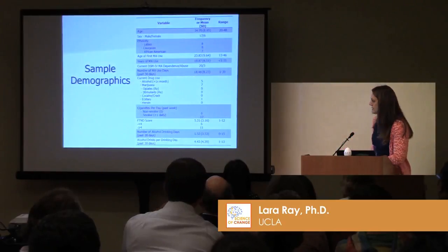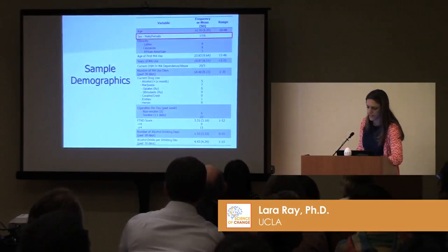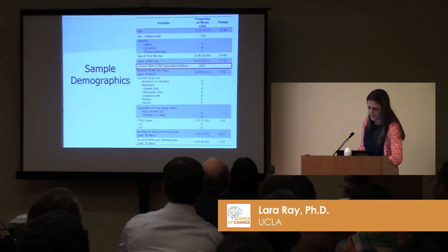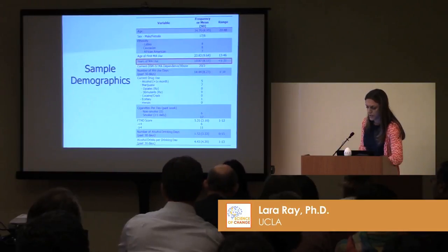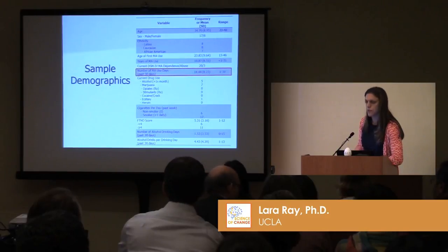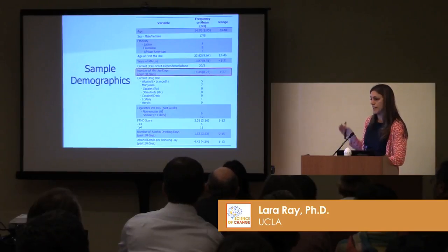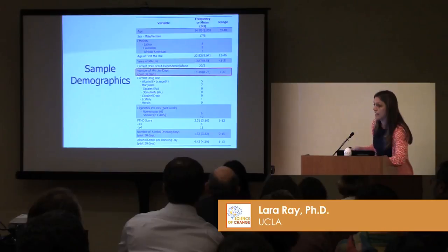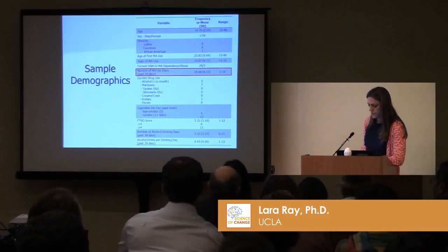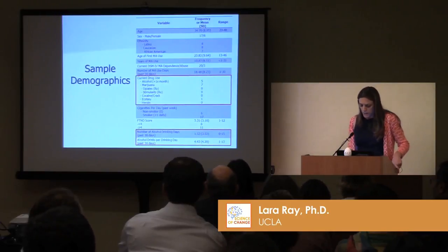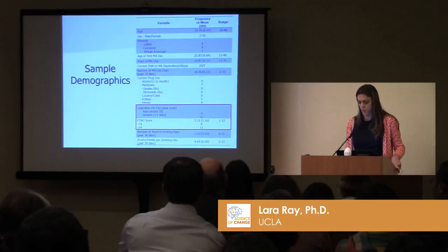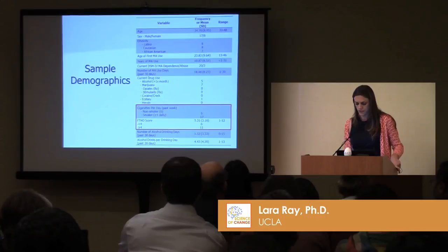A little bit on our sample: these individuals are on average 35 years old, mostly male, and meet criteria for a methamphetamine use disorder. They report an average of 10 years of meth use and reported using methamphetamine 18 out of the past 30 days from the timeline follow-back. About two-thirds of them were smokers. Importantly, they serve as their own controls — one of the advantages of our crossover design.